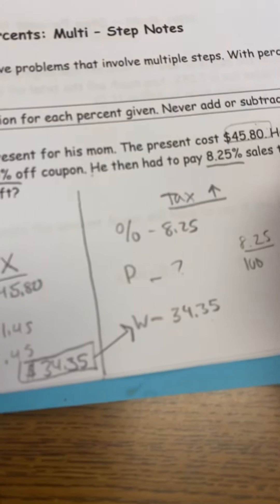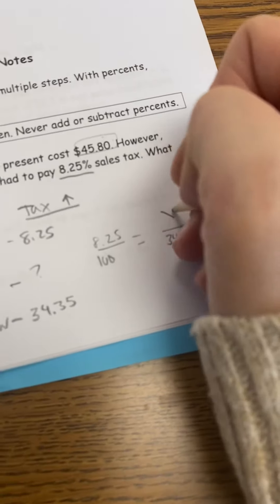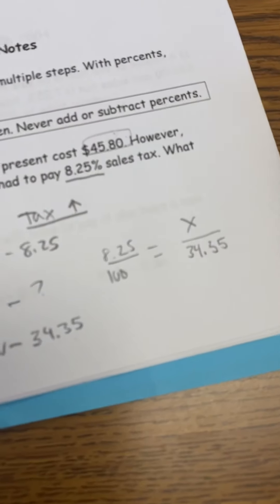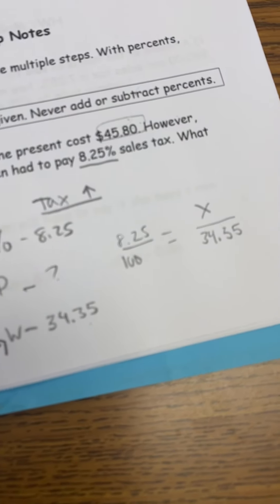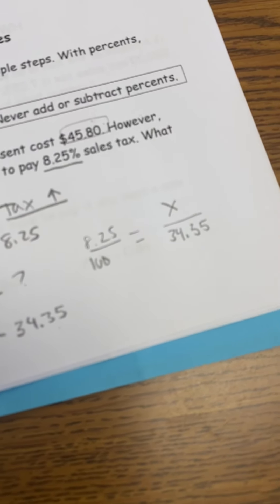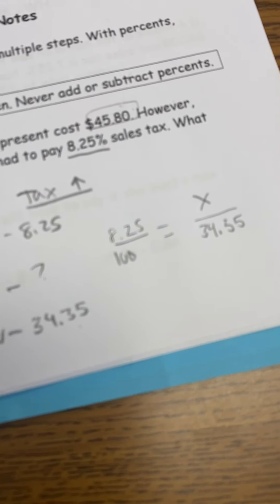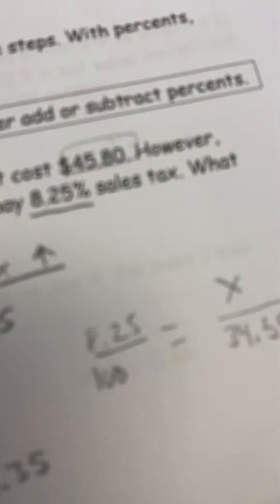Okay, what are we going to put here? 8.25, and the whole is 34.35 - that's given because that was the answer to our first part. And I'm going to put x here. So let's find 8.25% of 34. So you're going to cross multiply. I'm going to do it a little differently - I like to do 34.35 times 0.0825.